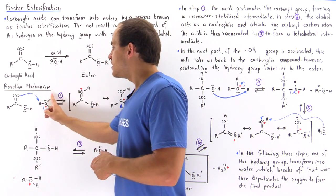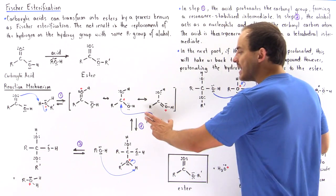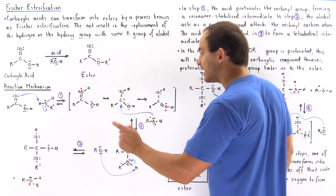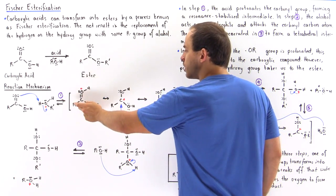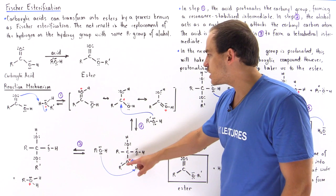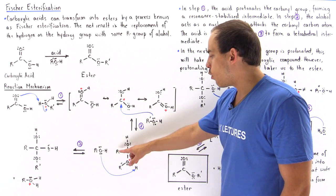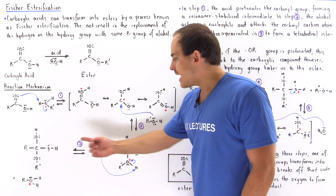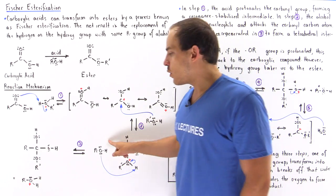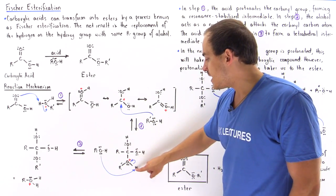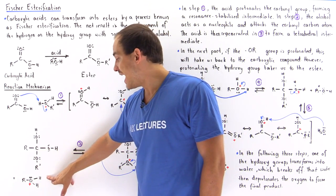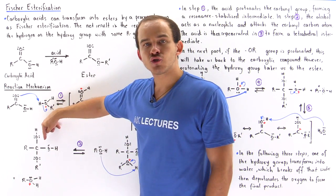Once this oxygen is protonated, the acid is deprotonated and we form an alcohol molecule. In step two, this alcohol molecule acts as the nucleophile, attacking the carbon of the carbon-oxygen double bond. We form an intermediate in which we have a positive charge on this oxygen, and this carbon is now attached to four different groups. In the next step, we have to regenerate the acid from step one, so an alcohol deprotonates this group, regenerating our conjugate acid and forming the tetrahedral intermediate.